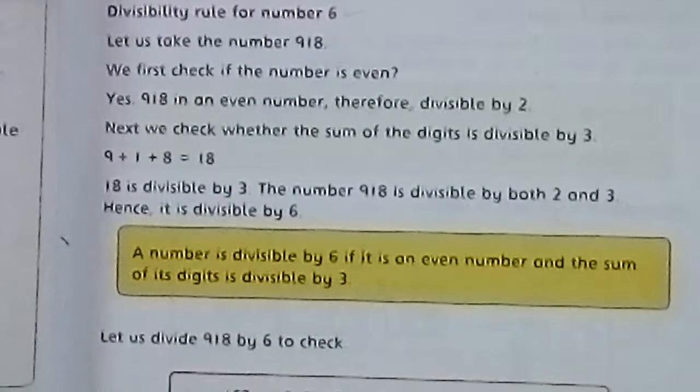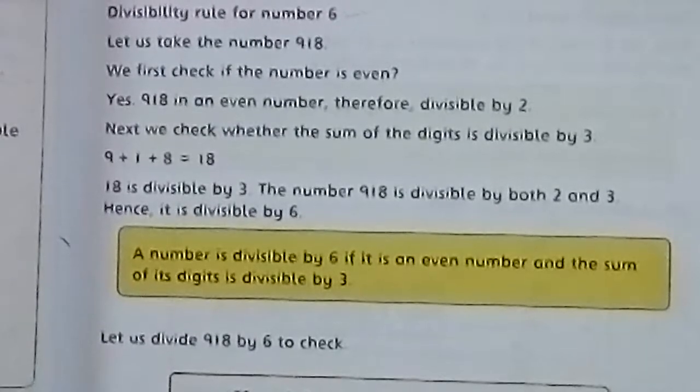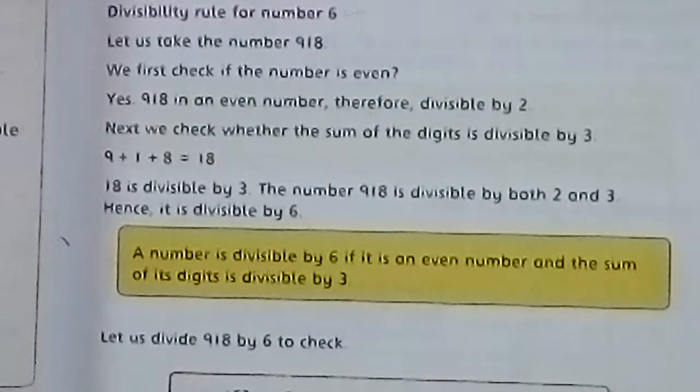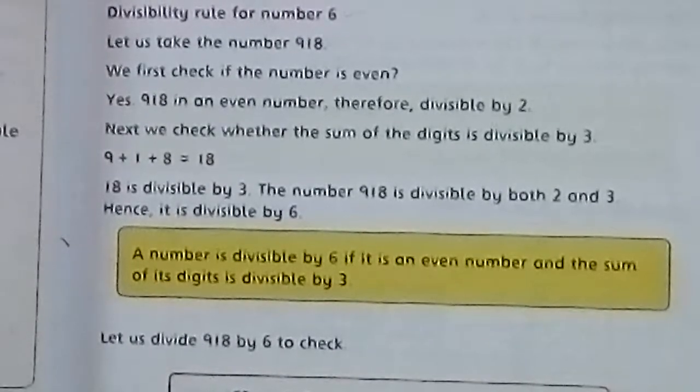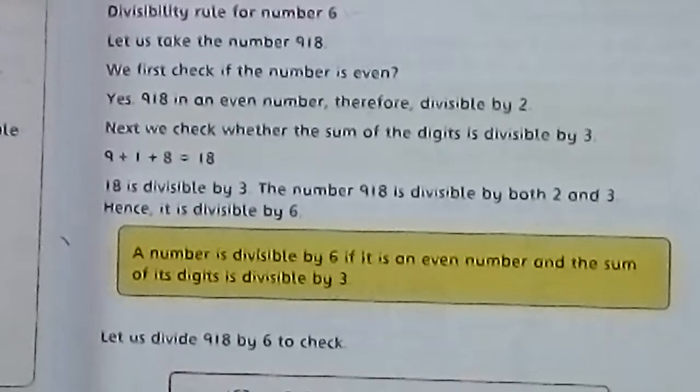So students, divisibility rule for number 6 ke liye bhi aap ke paas do conditions hain. The first one, ke woh jo number hai woh even hona chahiye. Ab even number dekhne ke liye hum kya dekhte hain ki number ke last mein agar 2, 4, 6, 8, 0 aa raha hai to it means ki woh number even hai. Agar first cheez aapne even check karna hai ki number even hai ya nahi.